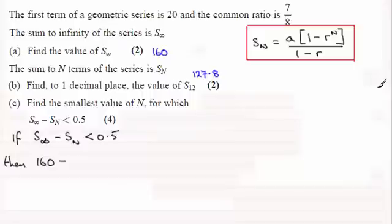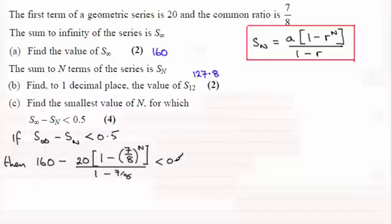So for this question, minus the sum of the first n terms according to the formula is going to be A, which is 20, times 1 minus the common ratio (1 minus 7/8) to the power n, divided by 1 minus 7/8, and that has to be less than 0.5.